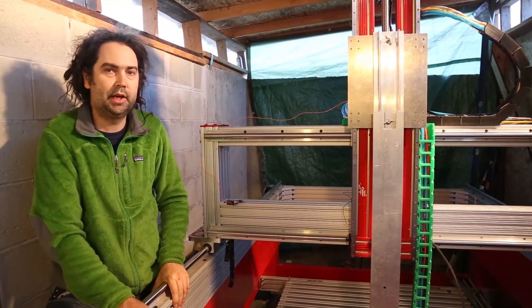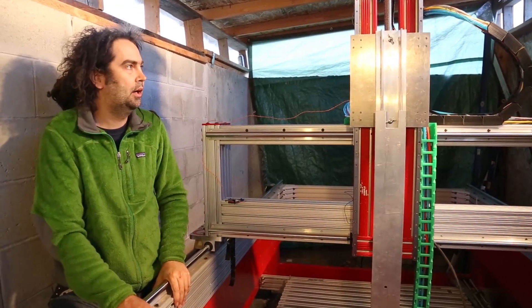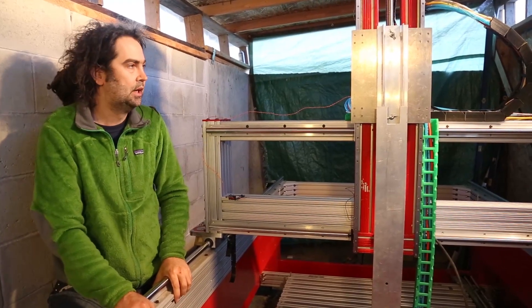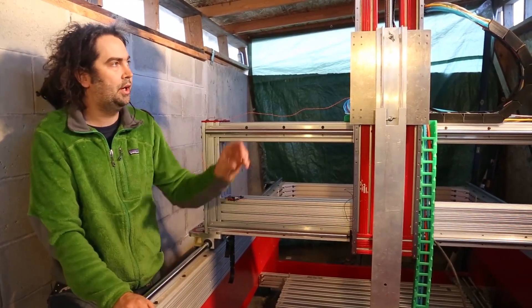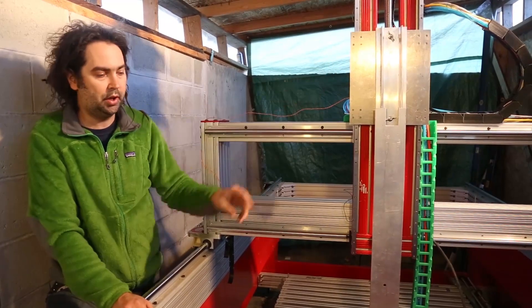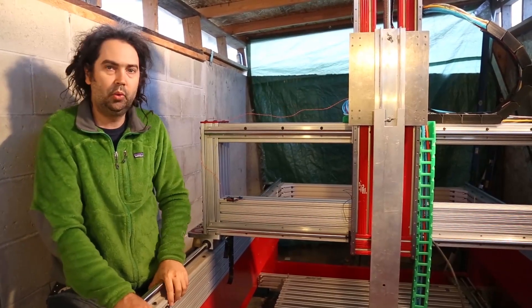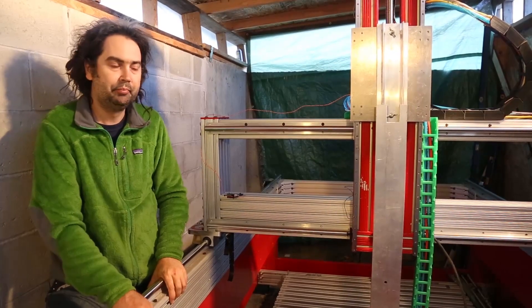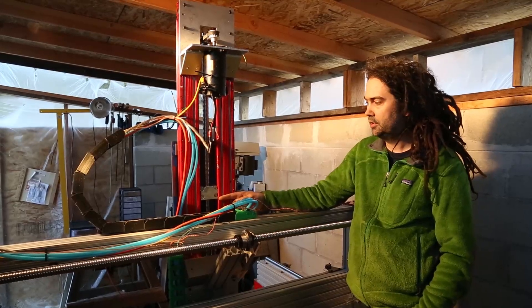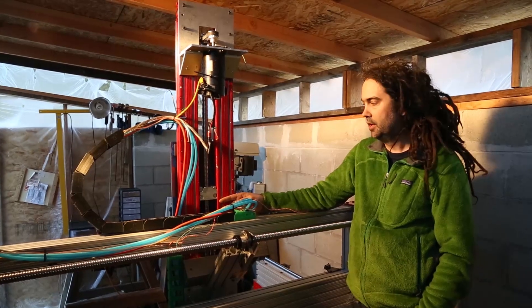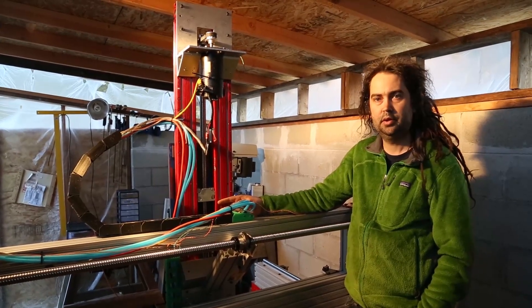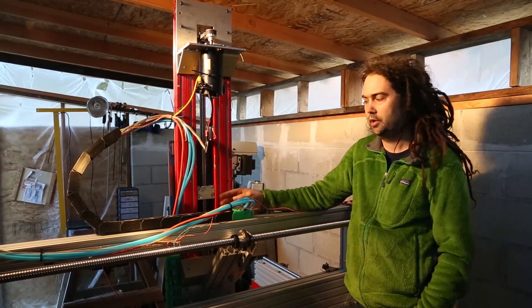So I use what I call the lost PLA casting process. I essentially printed a plastic model of the part, then made a mold, then burnt out the plastic and filled it with molten aluminum. Here's the casted part in service on the machine. What I'd like to do now is show you the process that I used, going from design to 3D print to the final casted part.